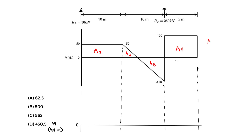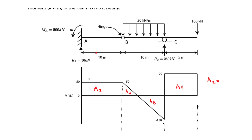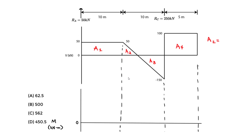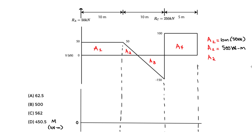Let's solve for A1. A1 is a rectangle with a height of 50 kilonewtons and a base of 10 meters. The area of a rectangle is base times height: 10 meters times 50 kilonewtons. A1 equals positive 500 kilonewton-meters — positive because 50 kilonewtons is above the zero line. Notice these are the units of moment. Now let's find A2, which is a triangle, so the area is one-half base times height. The base distance is not directly given — we'll need to use similar triangles.